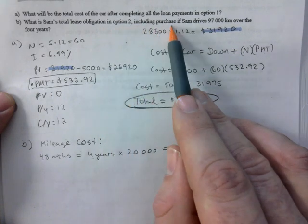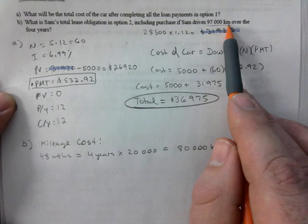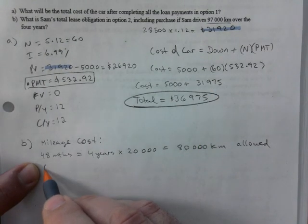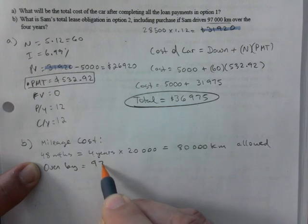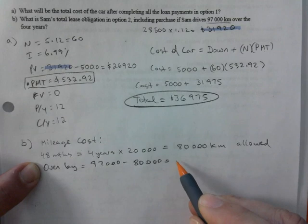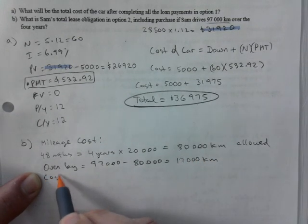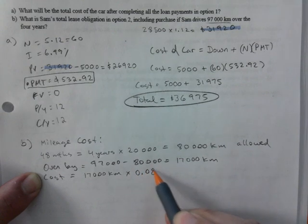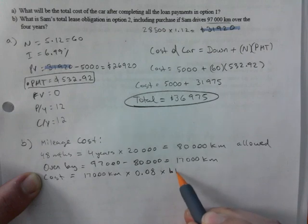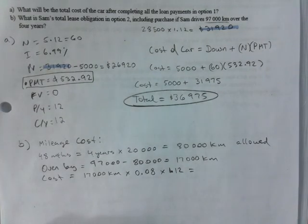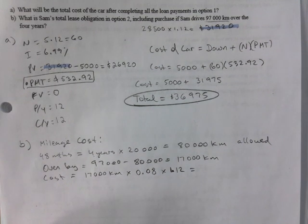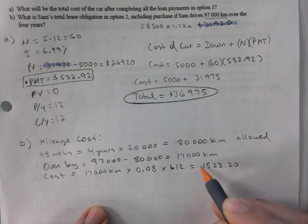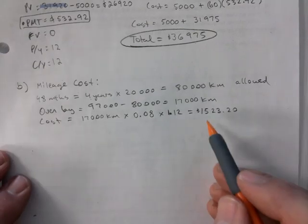I'm allowed how many kilometers per year? It's not always going to be 20,000, but here it is. So I'm allowed about 80,000 kilometers. If you read here, what's Sam's total lease obligation including the purchase if Sam drives 97,000 kilometers? So how many over am I? 17,000. So I'm going to go over by 97,000 minus 80,000. That's 17,000 kilometers. Cost will be 17,000 kilometers times 8 cents per kilometer. You have to smack on the taxes yet. And this gives you $1,523.20 extra for mileage. That's how much that would be just for the extra kilometers.